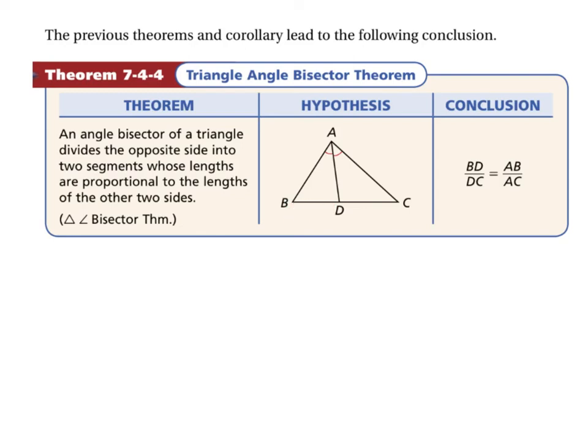For example, the length of BD divided by the length of DC would be equal to the lengths of the other two sides. We could say is equal to the length of AB divided by the length of AC.